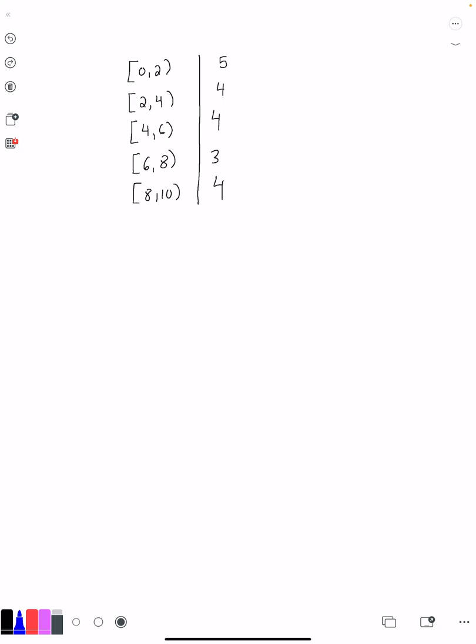We learned in the other video, but I'll remind you: to find the class midpoint, you just take the lower class limit for where you're at and the next lower class limit, add them up, divide by 2. So that means the class midpoint here is 1. 1 is the middle of 0 and 2, and then 3, 5, 7, and 9.